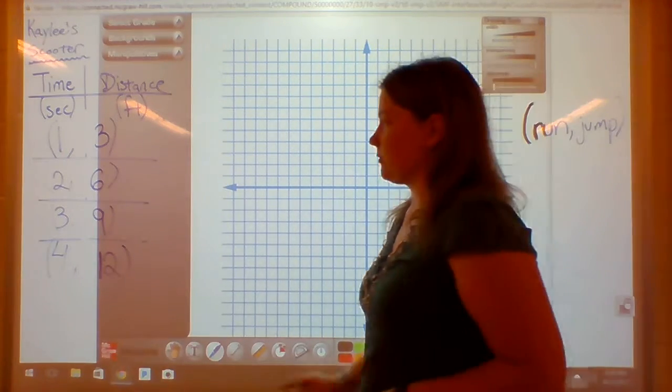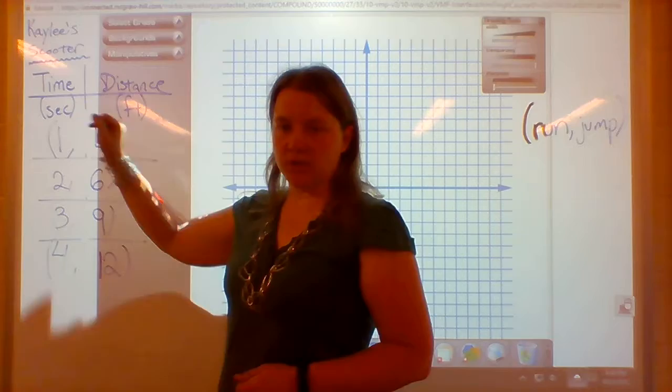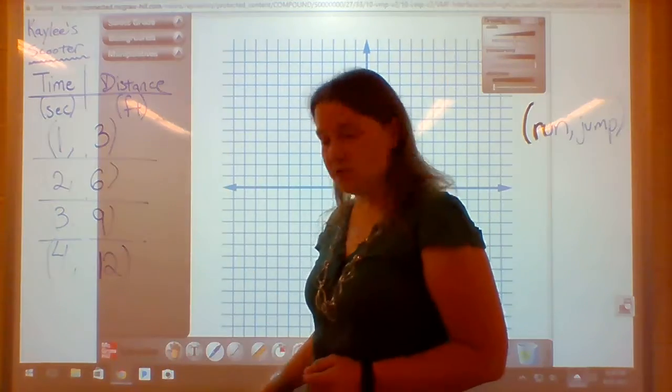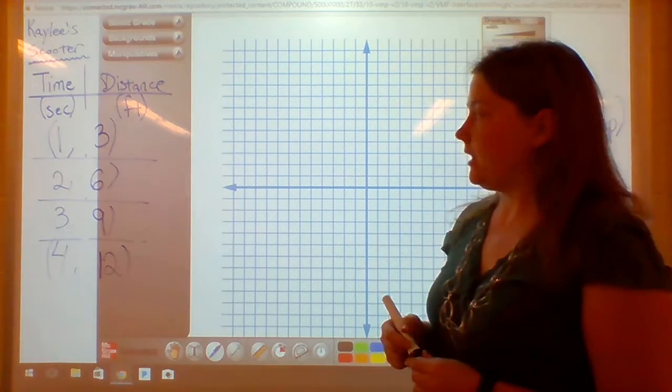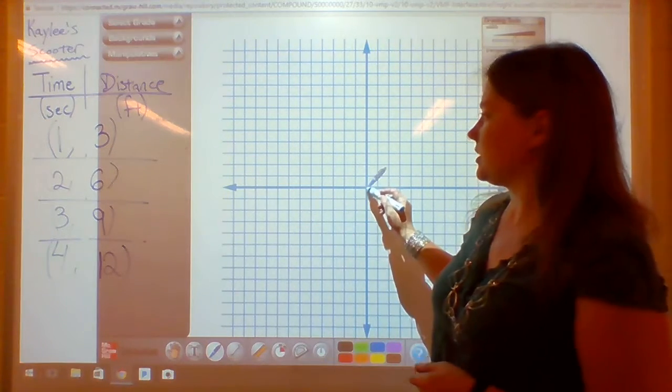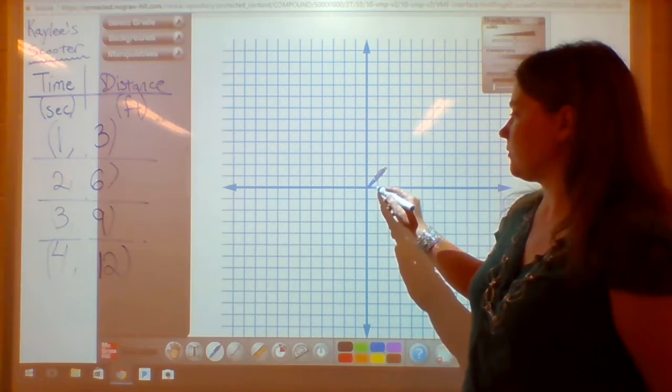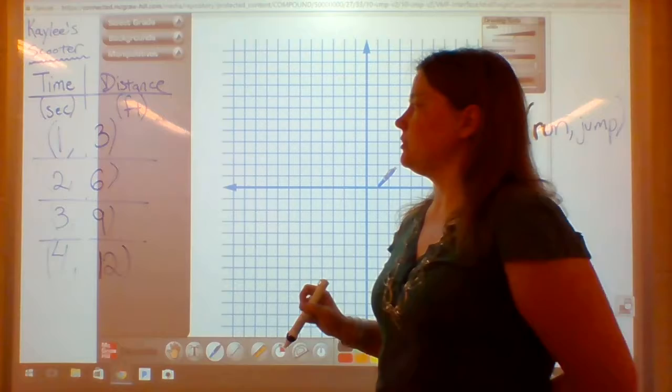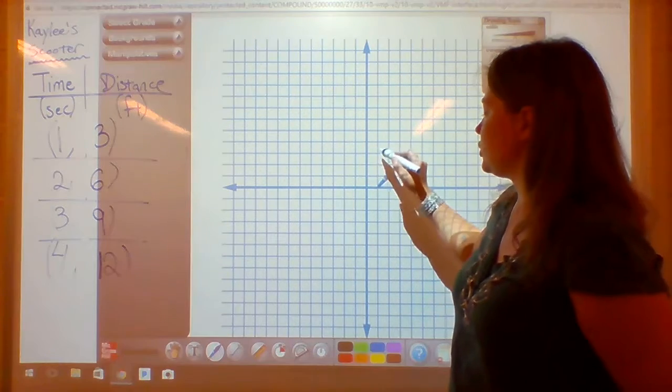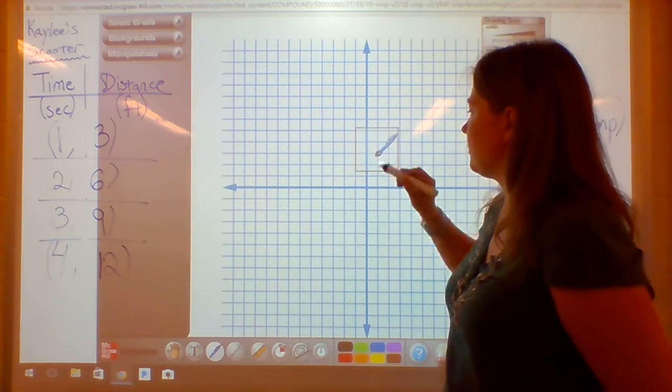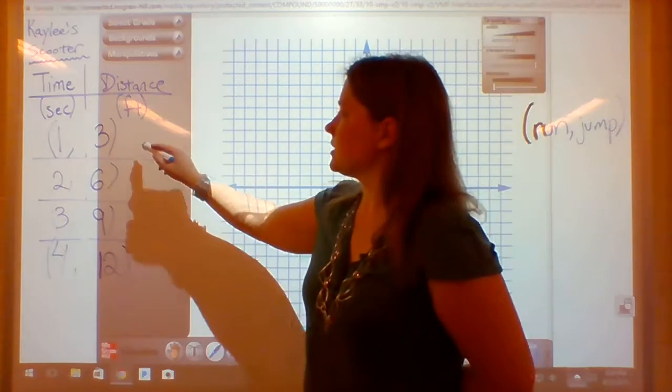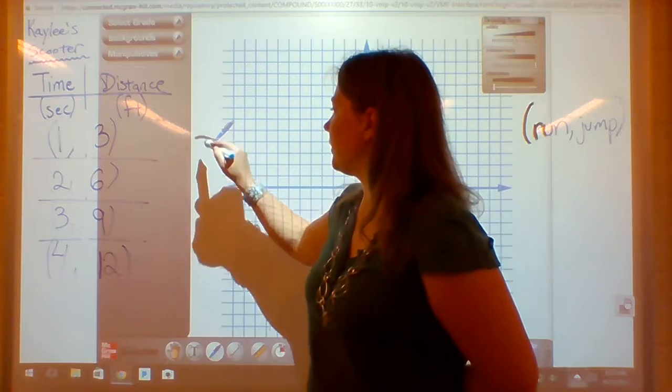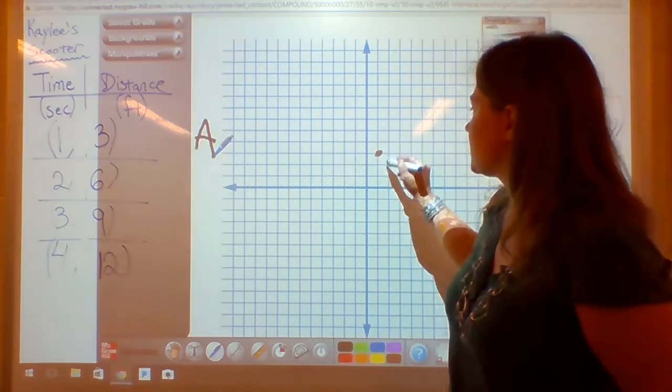So this first number is always the x coordinate. The second number is always the y coordinate. So for my first ordered pair, you see that run there. It says start at the origin and you run 1. So I'm going to run to one spot. And then my jump direction says that you jump 3. So I'm going to jump 3, and that's where I'm going to put my first point. And that is point A.